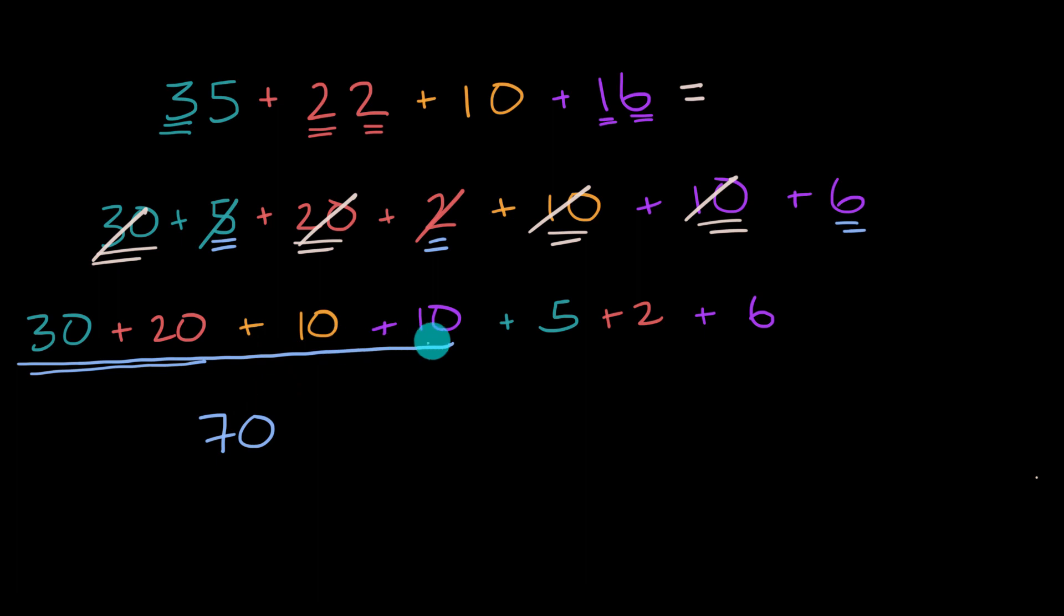So that's all going to be 70. Another way to think about it is we have three tens plus two tens plus one ten plus one ten. Three plus two plus one plus one is seven. So we have seven tens. And you actually saw that up here as well. Three tens plus two tens plus one ten plus one ten, that's going to give us seven tens.